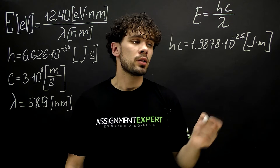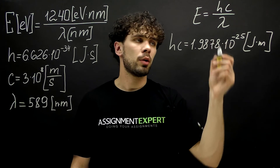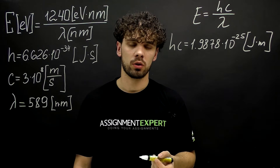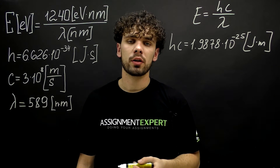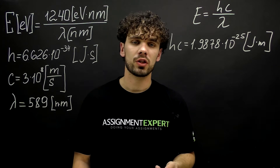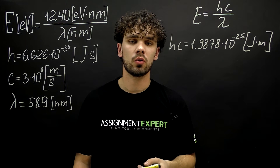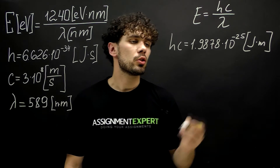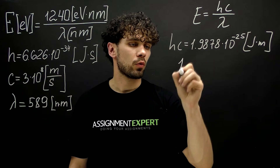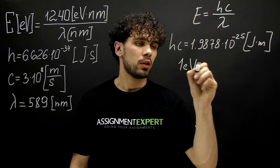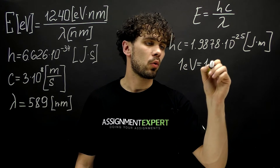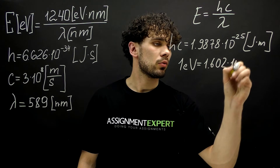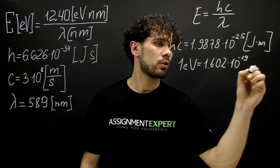So now if we divide this number by lambda, we will find the energy of a photon in joules. But when we're dealing with particles like photons or electrons, it is convenient to use another unit, which is electron volt. And here we need to recall that one electron volt is equal to 1.602 times 10 raised to the negative 19th joules.